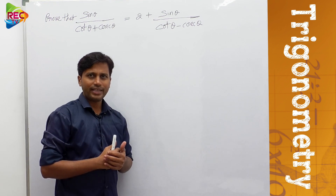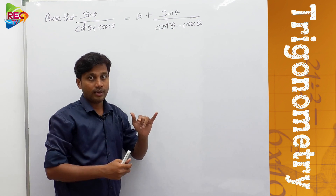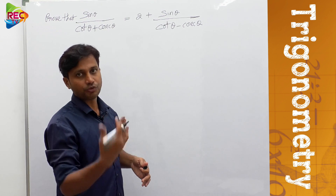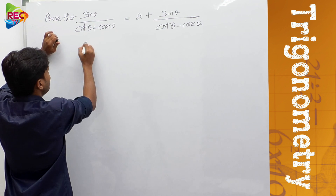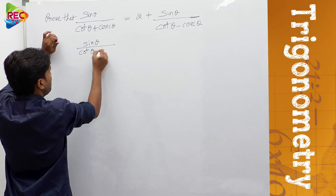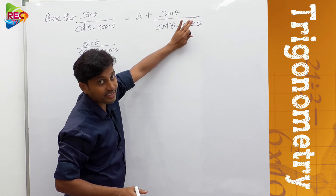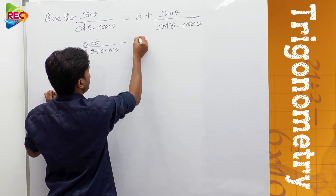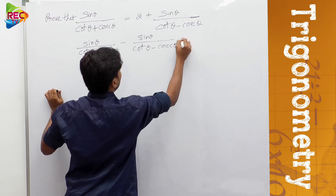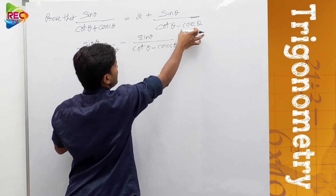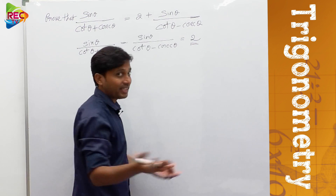If you do it as it is, it may be difficult, because showing this equal to 2 plus something looks clumsy. So for our convenience, we'll do a rearrangement. Take the term sin θ/(cot θ - cosec θ) to the other side — it becomes minus. So instead, we prove: sin θ/(cot θ + cosec θ) minus sin θ/(cot θ - cosec θ) equals 2. This is much simpler.